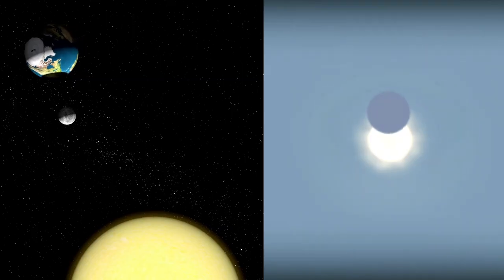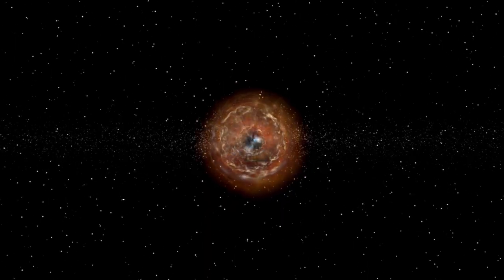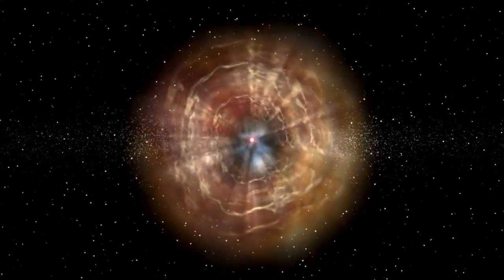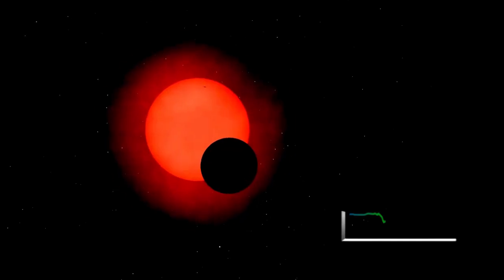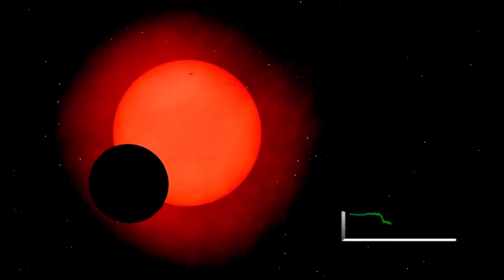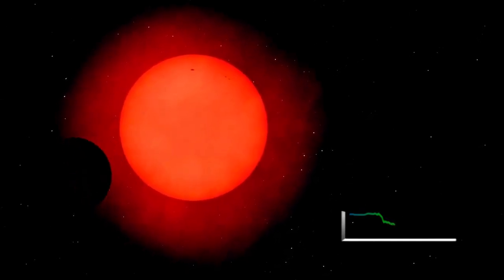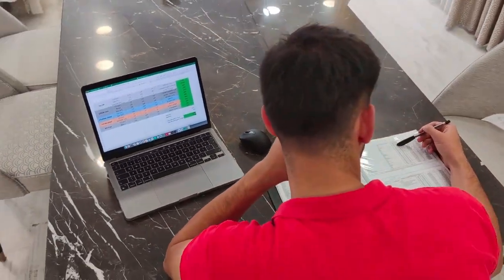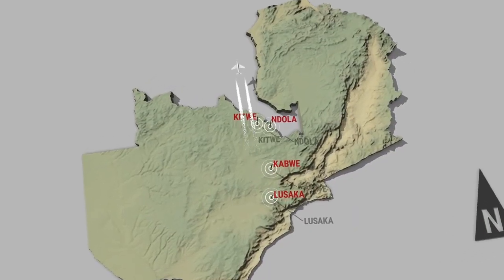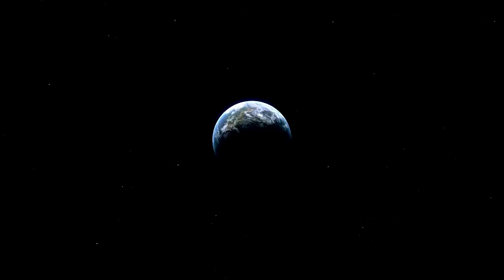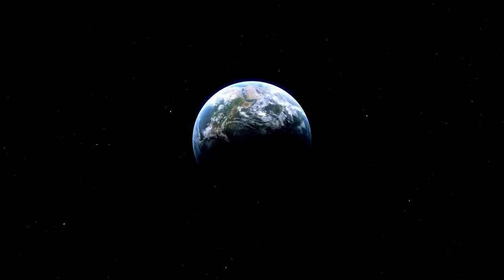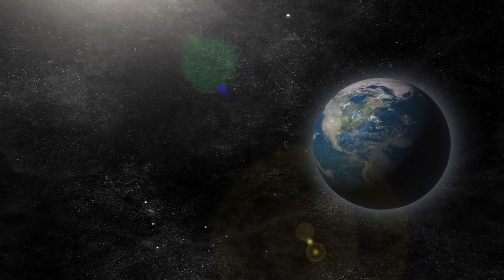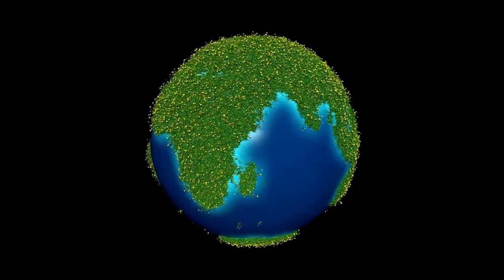Massive stars like Betelgeuse are complex laboratories of nuclear fusion, where the elements essential to life are created. The sudden brightening may indicate that fusion of heavier elements is intensifying, pushing the star toward its inevitable end. When fusion can no longer produce enough energy to counteract the force of gravity, the star collapses, leading to a dramatic explosion. If Betelgeuse is approaching this point, we may be witnessing some of the final warning signs. The ejection of gas, contraction of the core, and resulting turbulence could all be contributing to this current surge in brightness.